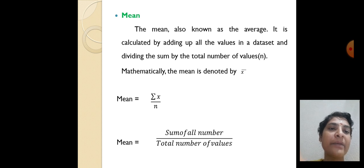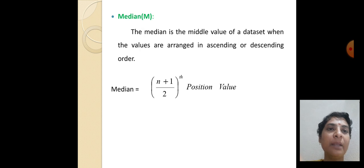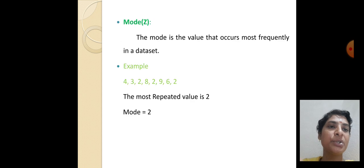Median - the median is the middle value of a data set when the values are arranged in ascending or descending order. The formula for median is (n+1)/2 position value.